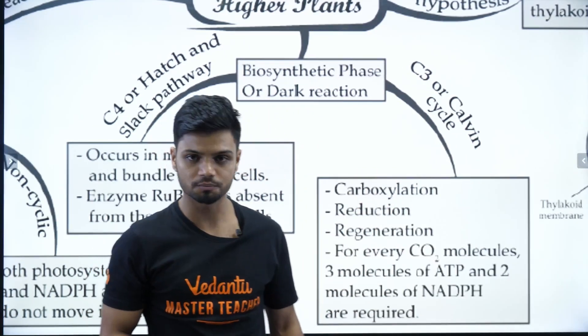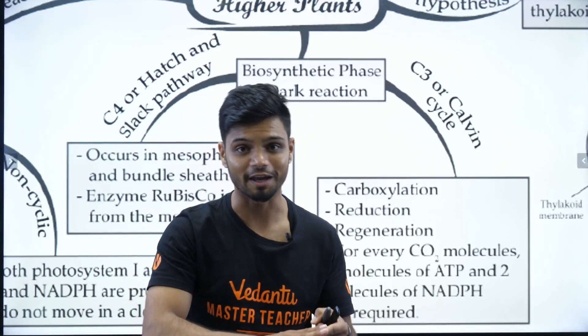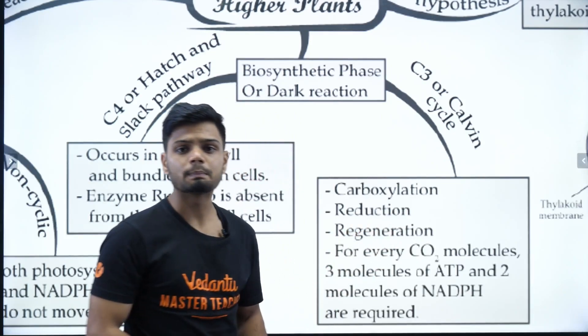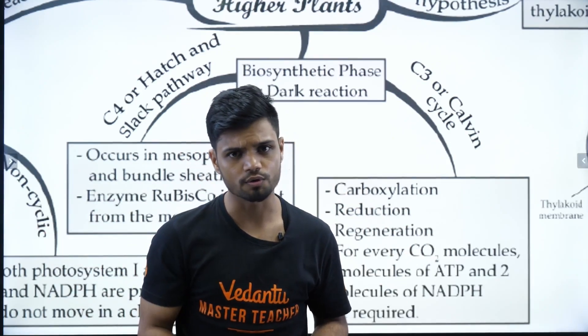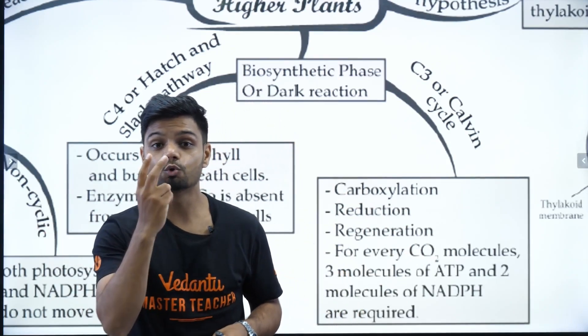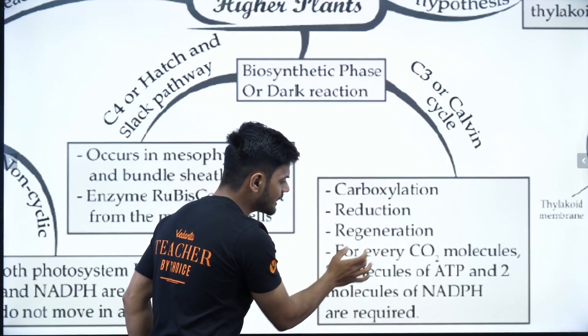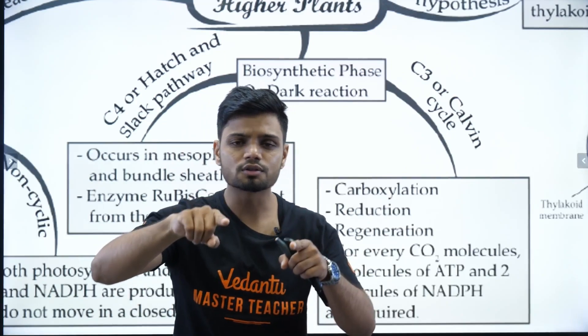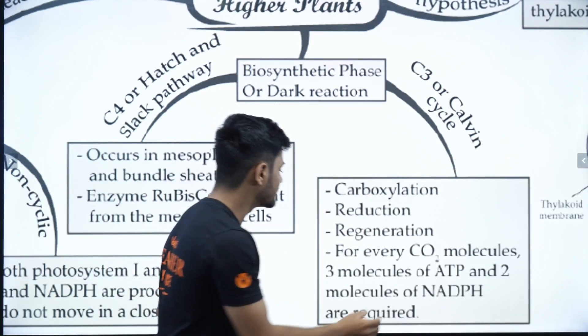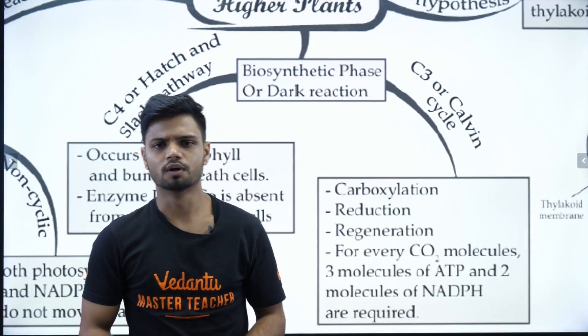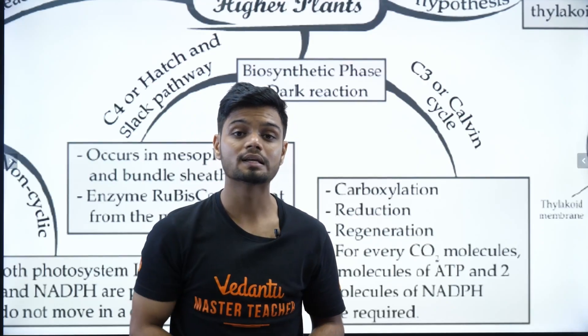Here, we have three main steps. The first step is called carboxylation, where RUBP is combined with CO2 to produce PGA. Then we have reduction, where PGA is being reduced to triose phosphate, which later gets converted to glucose. In the second step, 2 ATP and 2 NADPH is consumed in the reduction. Then we have regeneration. In regeneration, triose phosphate is regenerated to RUBP. In that step, 1 ATP is again consumed. So, in total, 3 ATP and 2 NADPH is consumed to fix 1 CO2.